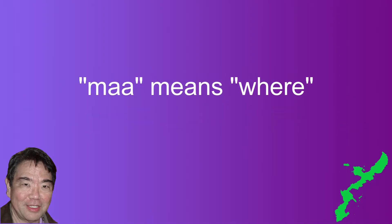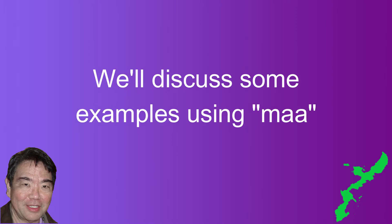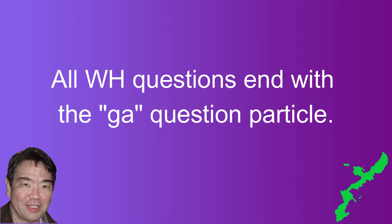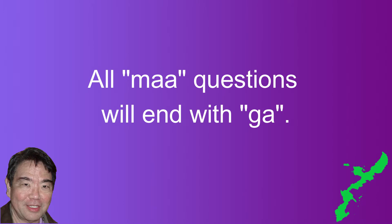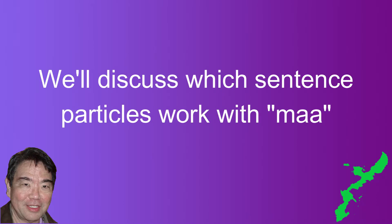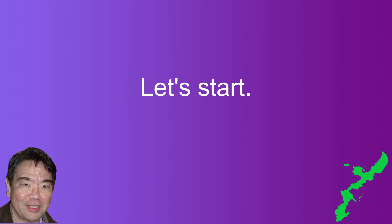Hopefully the popularity and craftsmanship of Sabani continues and this part of Okinawan culture is not lost. Okay, let's start. Today's topic is the question word "ma," which means "where." In Japanese it is equivalent to the word "doko." In today's video we'll discuss very common "where" questions you can use in your Uchinaguchi conversations. As we learned in video 11, WH question word sentences must end with the "ga" question particle. None of the yes/no question particles would be used.